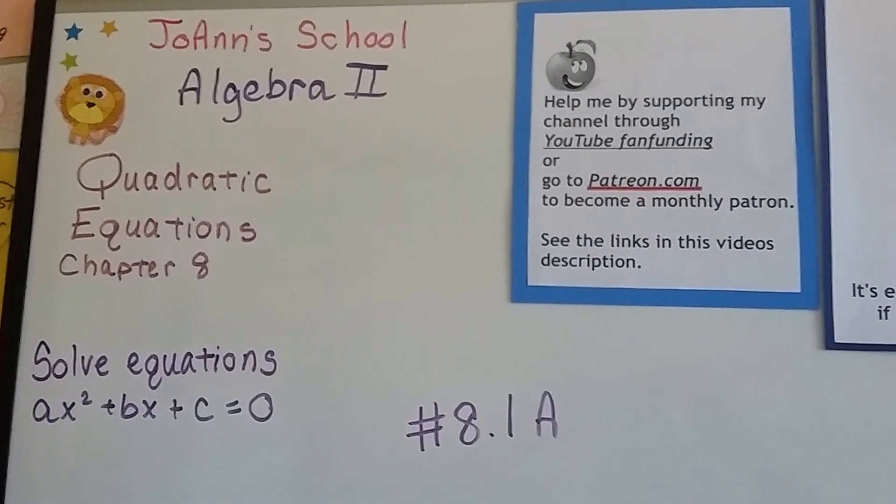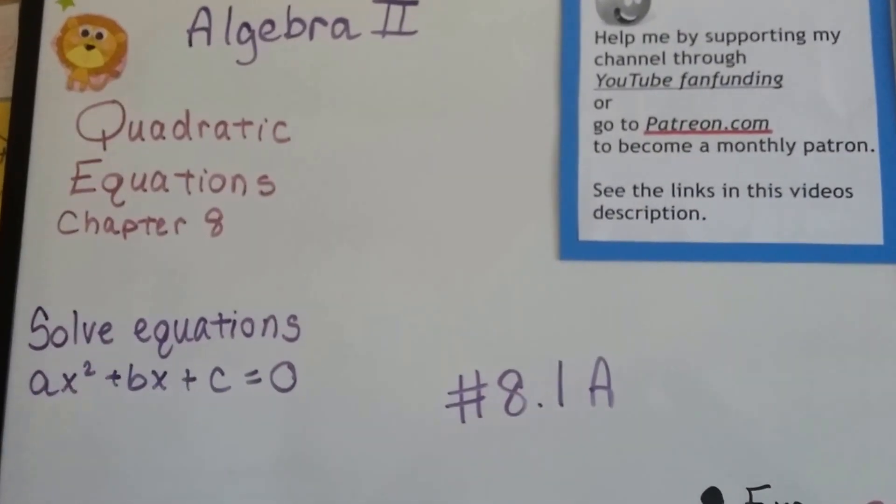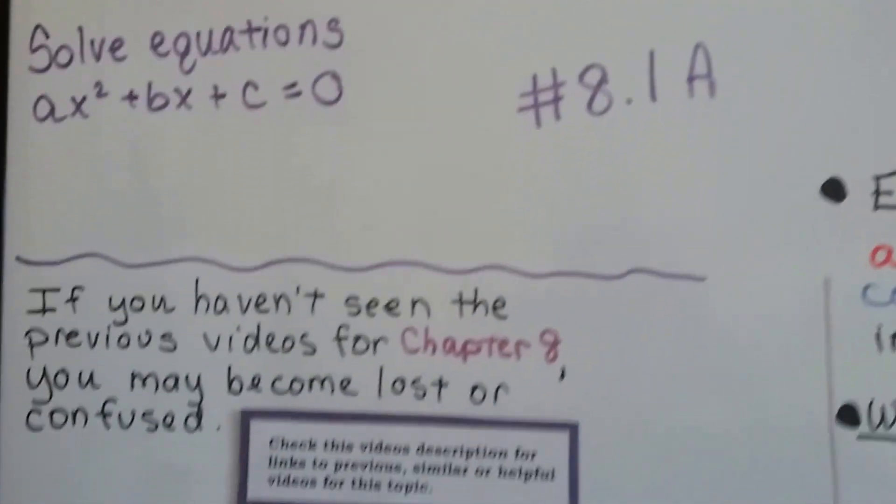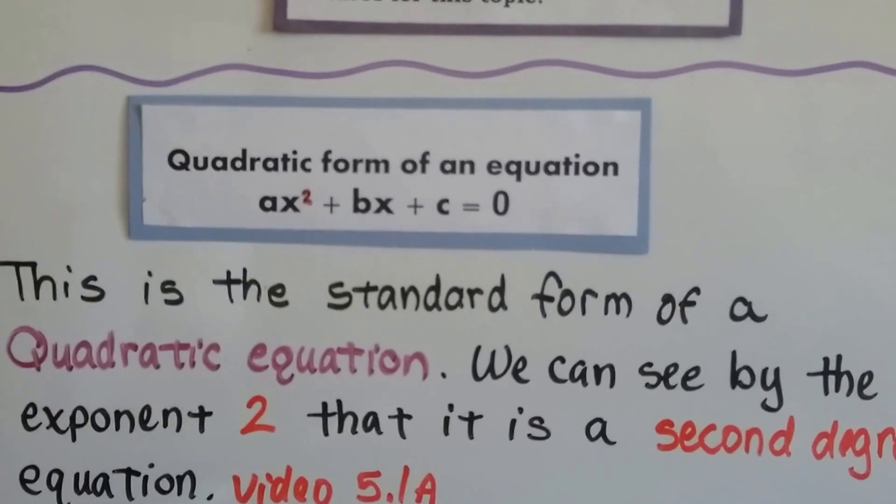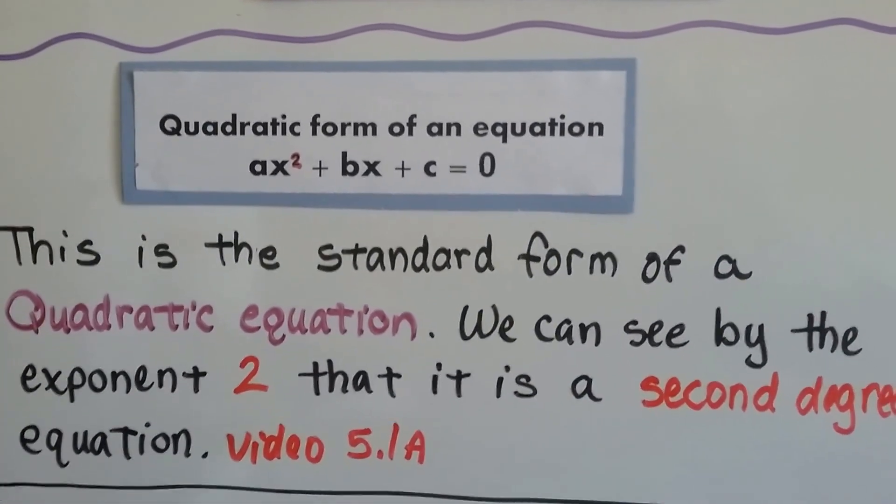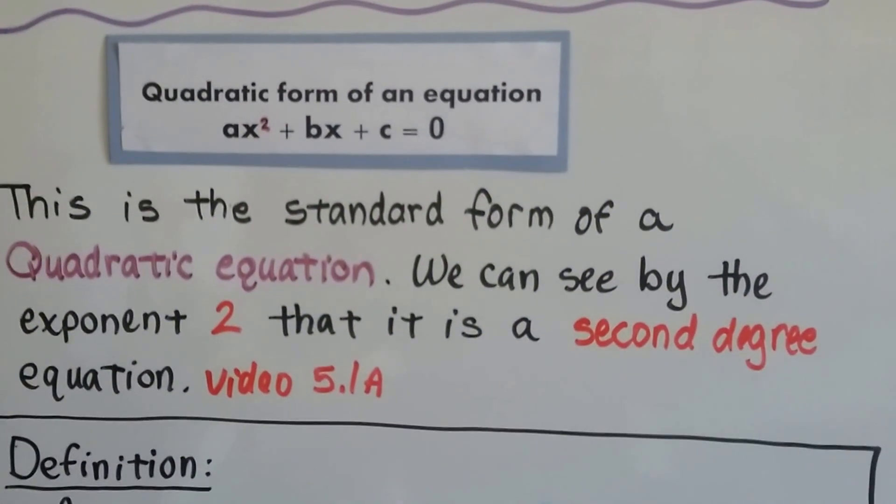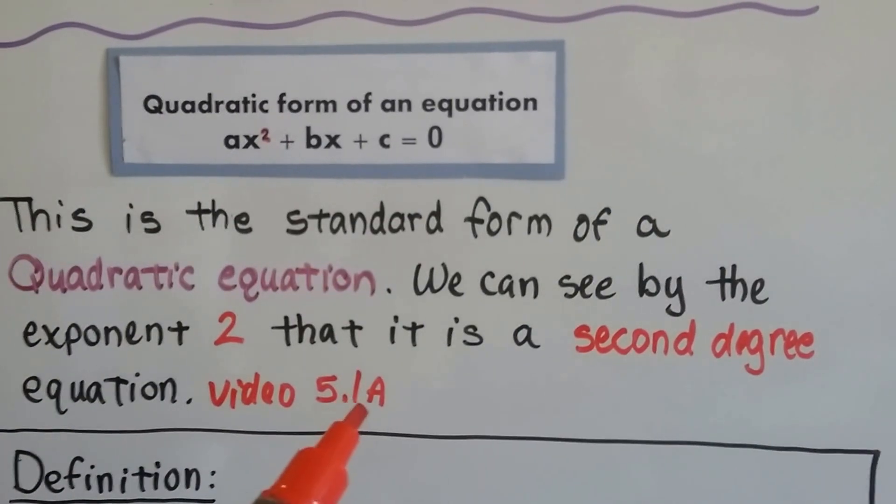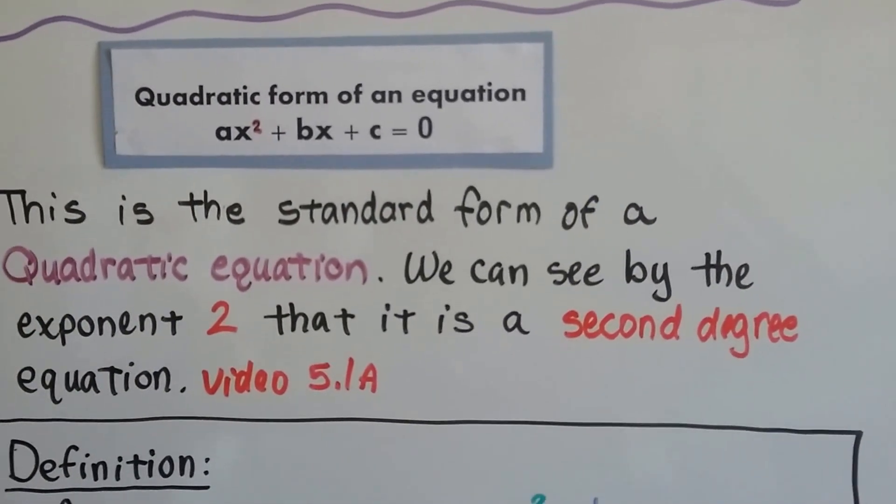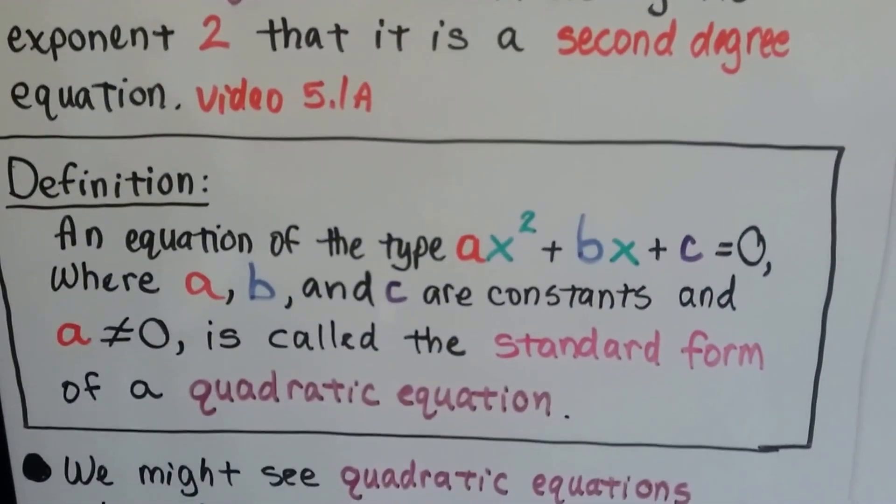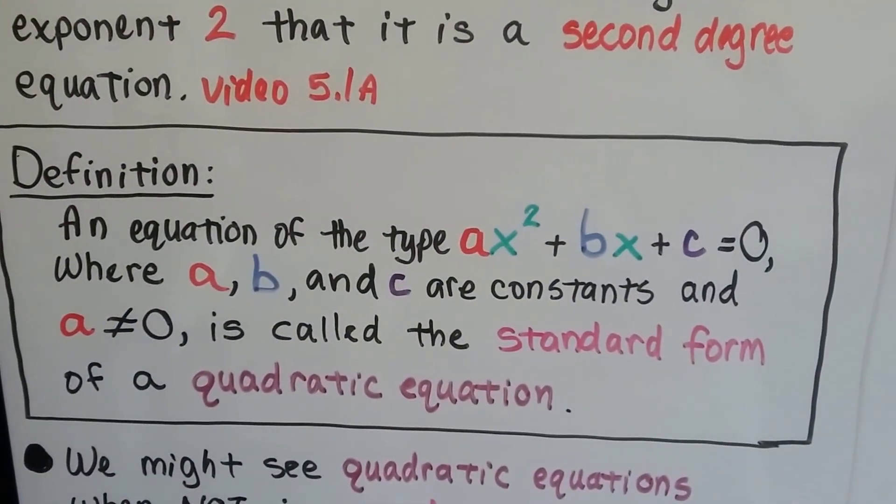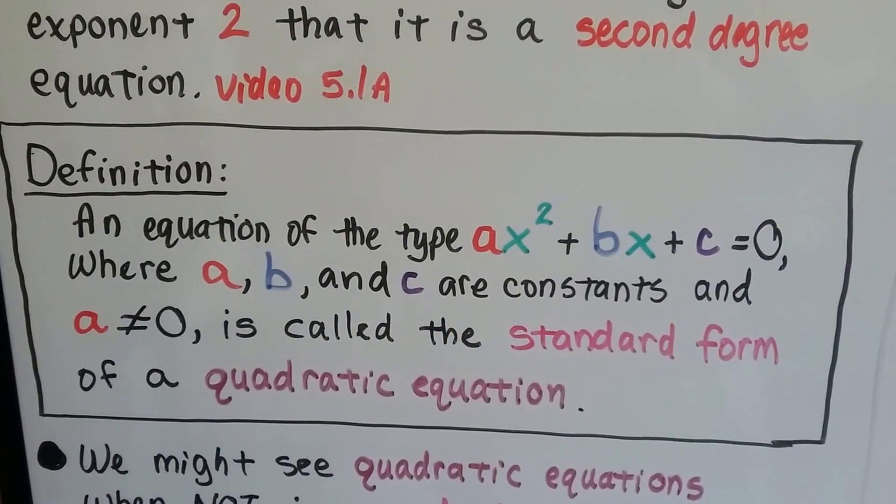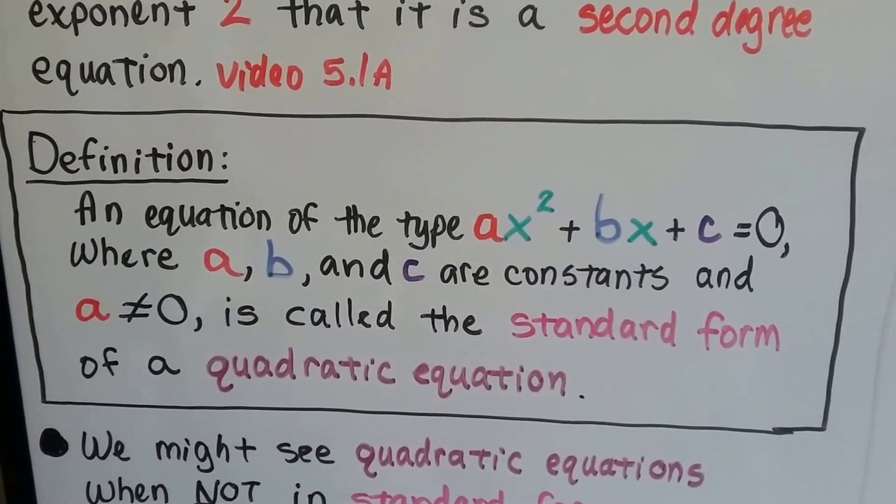Algebra 2, we're now in chapter 8, 8.1a. We're going to solve quadratic equations in the form of ax squared plus bx plus c equals zero. So this is the standard form of a quadratic equation. And we can see by the exponent 2 that's a second degree equation. We talked about that back in 5.1a, and a link to that video will be in this description. The definition is an equation of the type ax squared plus bx plus c equals zero, where the a and the b and the c are constants, and the a doesn't equal zero. It's called the standard form of a quadratic equation.